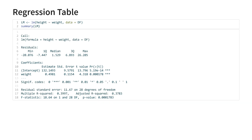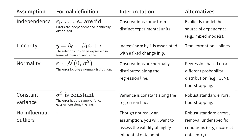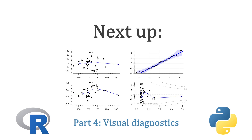In summary, regression tables might look a little bit intimidating at first, but most of the time you're only looking at the coefficients and maybe the bottom part to assess the fit. All these test statistics and p-values are based on the underlying assumptions of a simple linear model. So in the next video, I'll show you how you can assess whether these assumptions are reasonable.